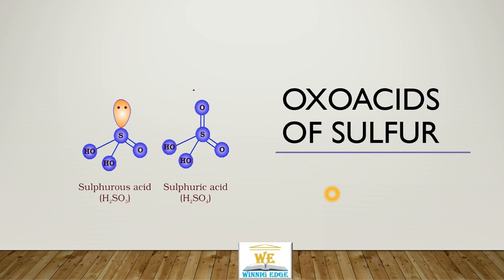Oxo acids of Sulphur. First, sulphurous acid — it has 3 oxygen atoms. Two exist as hydroxyl groups, one has a double-bonded oxygen and one lone pair.